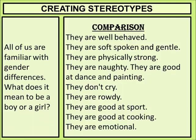Next, how do we create stereotypes? These are sentences spoken about genders. 'They are well-behaved' — this is always said for girls. Why does everybody think only girls should be well-behaved? Why not boys? 'They are soft-spoken and gentle' — again considered for girls. Why don't we teach our sons to be gentle and soft-spoken? 'They are physically strong' — this is always said for boys. Why can't girls be physically strong? Girls can also be physically strong.